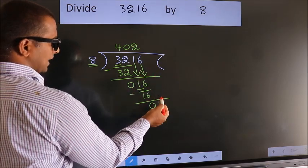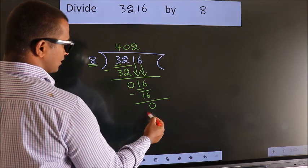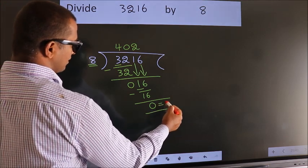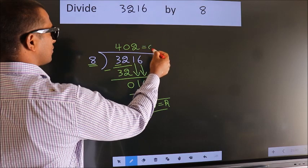No more numbers to bring it down. So we stop here. This is our remainder. This is our quotient.